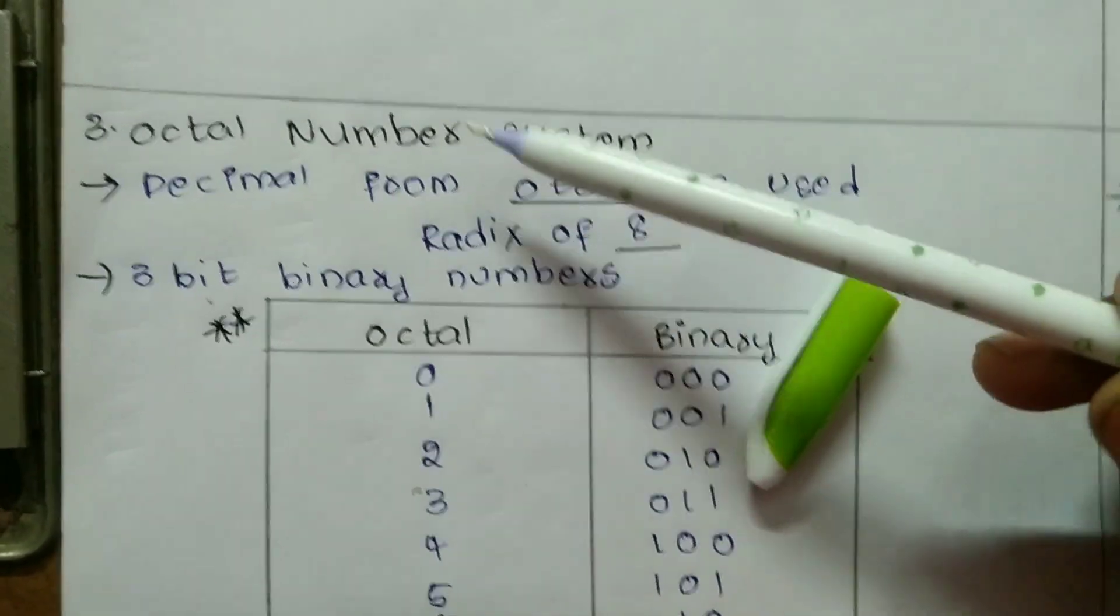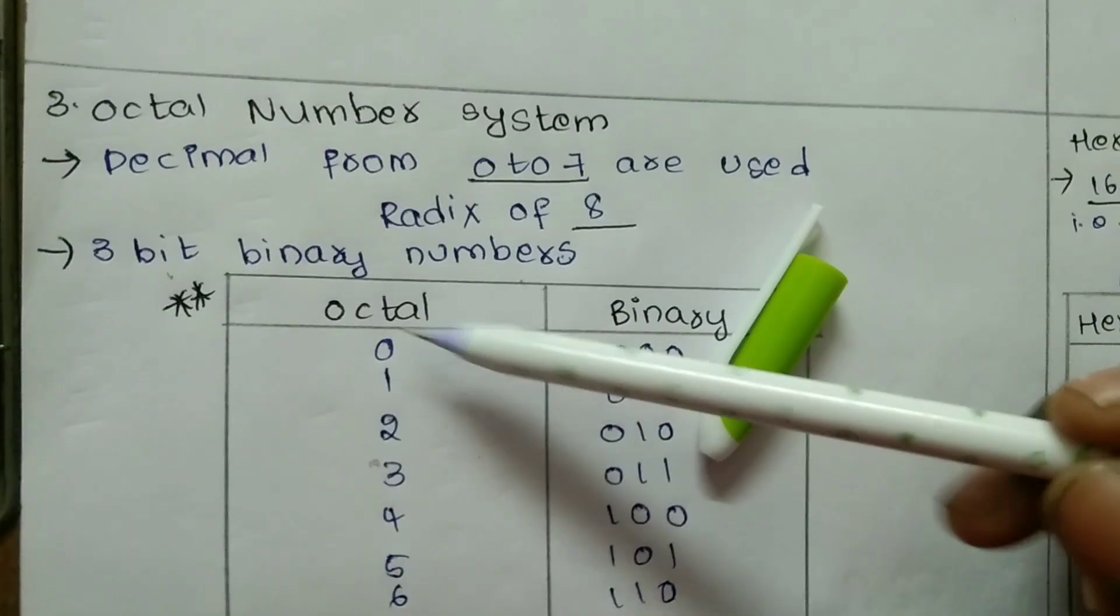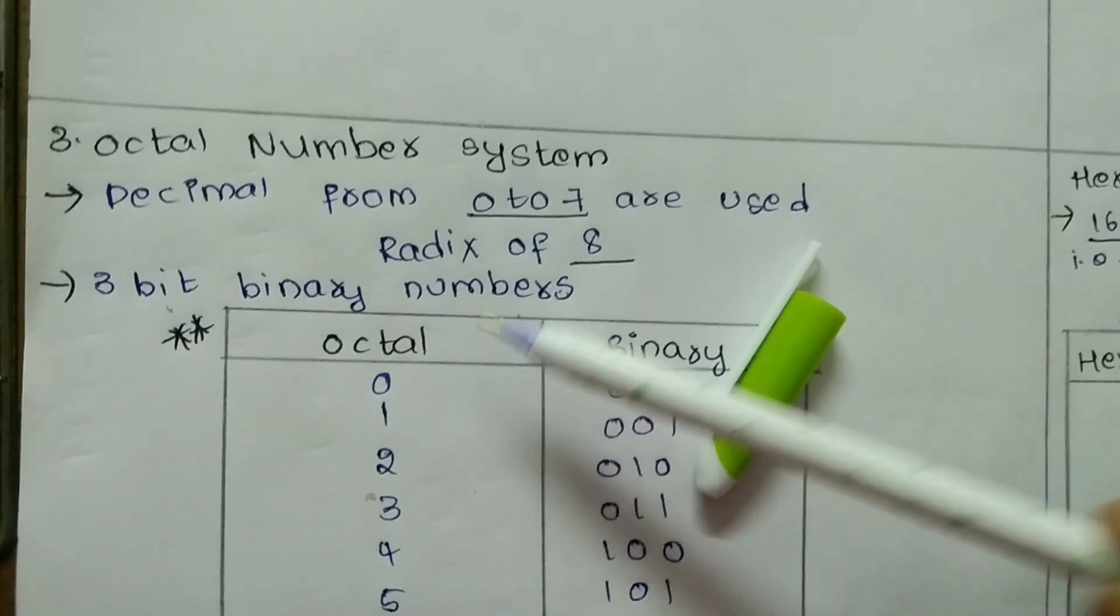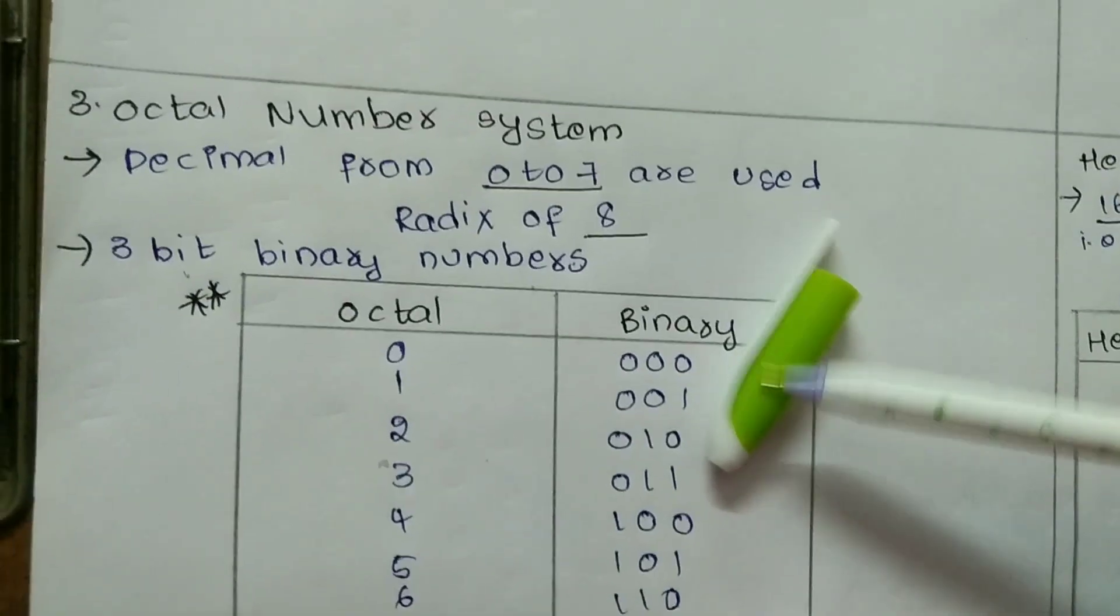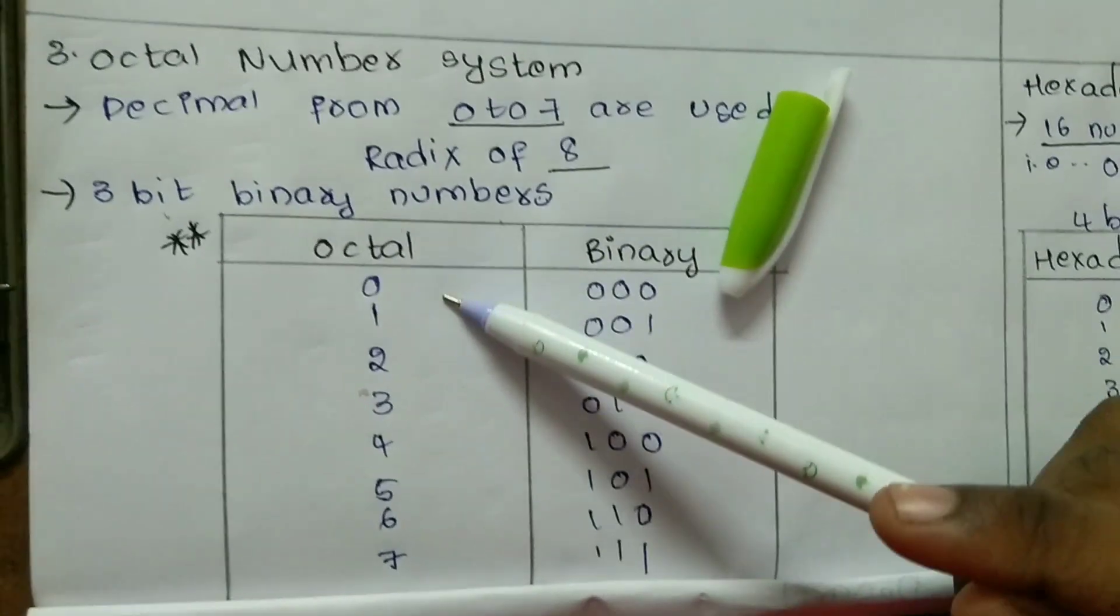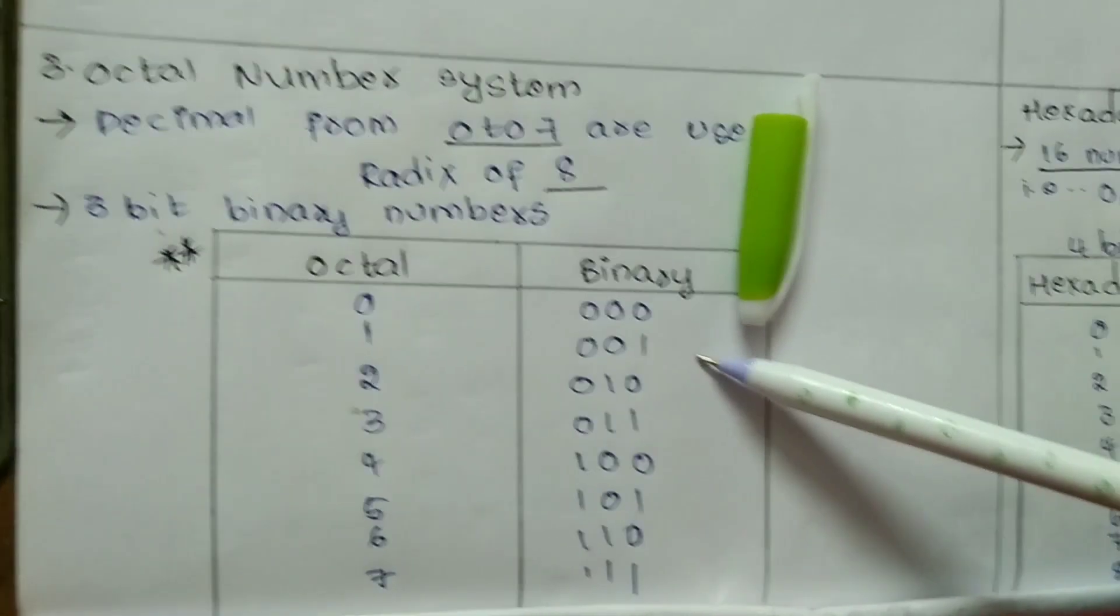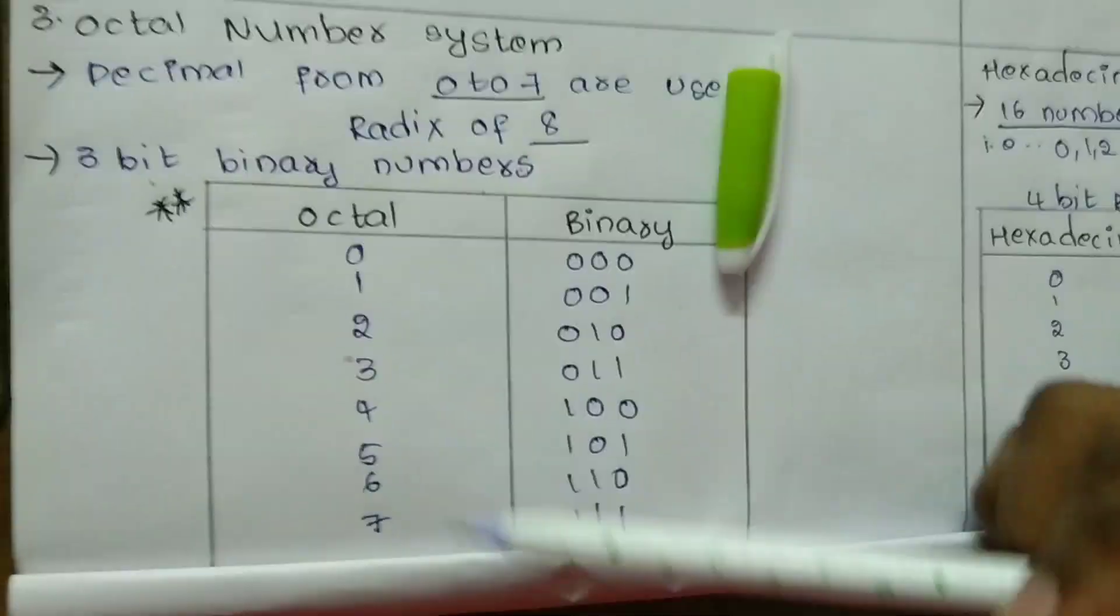And here third one is octal number system. Octal number system uses 3-bit binary numbers. This is the octal numbers in binary form. 0 is 000, 1 is 001, along with 0 to 7.